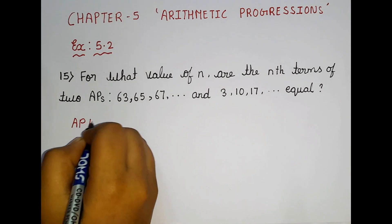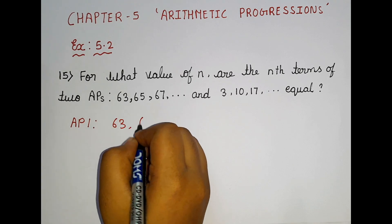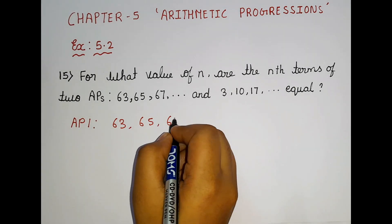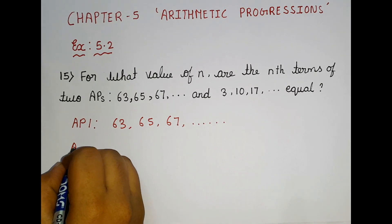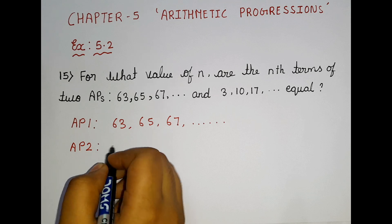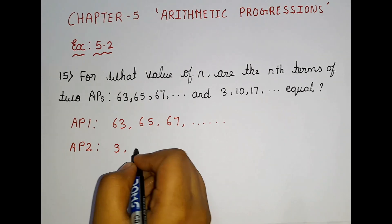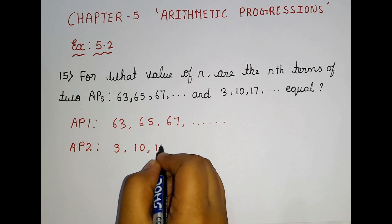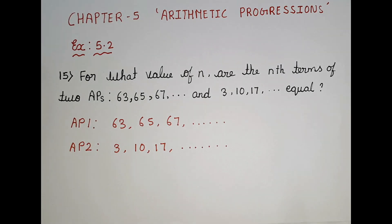AP number 1 is 63, 65, 67 and so on. AP number 2 is 3, 10, 17 and so on. These are the two APs. In these two APs there is an nth term.